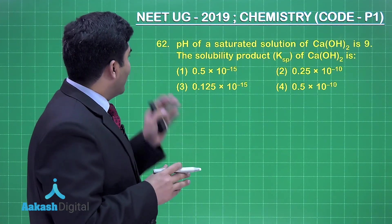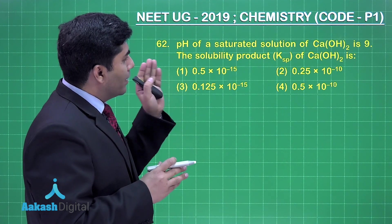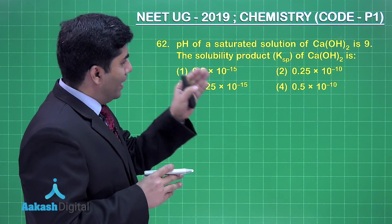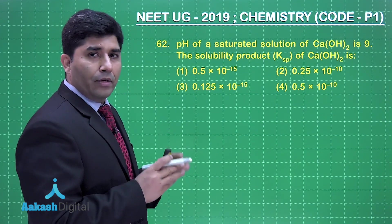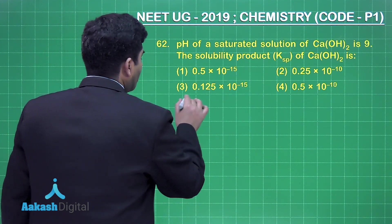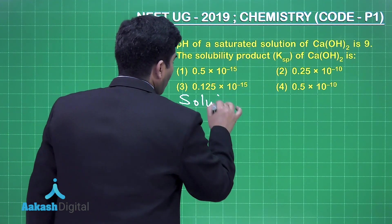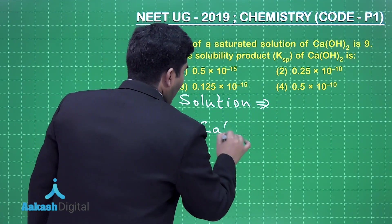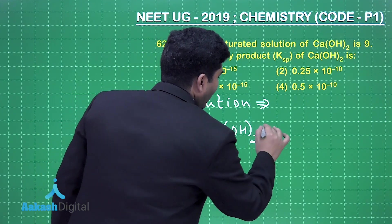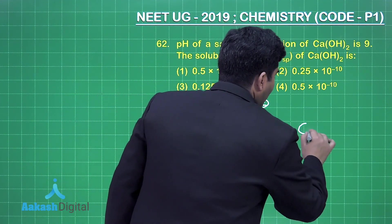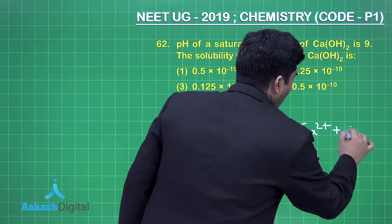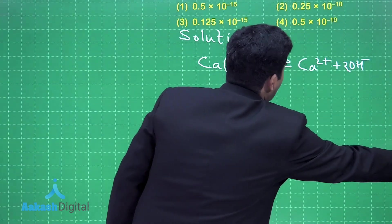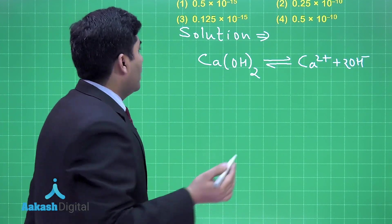This question asks: the pH of the saturated solution of calcium hydroxide is 9; find the solubility product KSP of calcium hydroxide. The solution starts by writing the dissociation equation: Ca(OH)₂ dissociates into Ca²⁺ plus 2OH⁻. Since it is a weak base, an equilibrium sign is used.